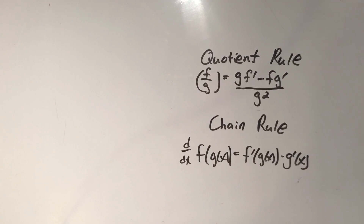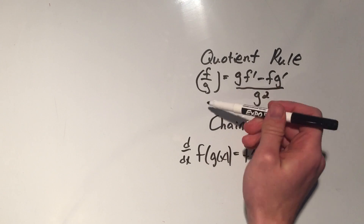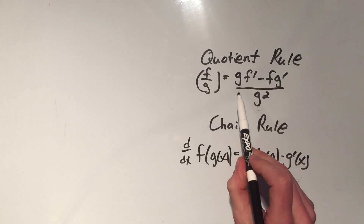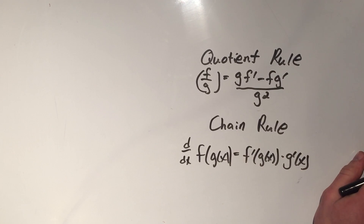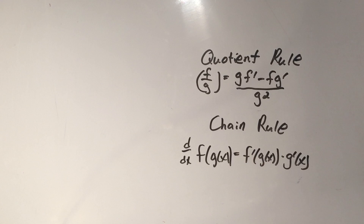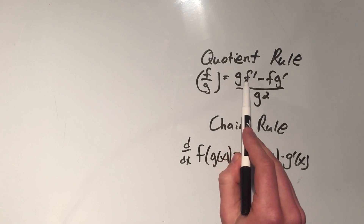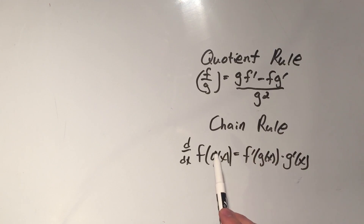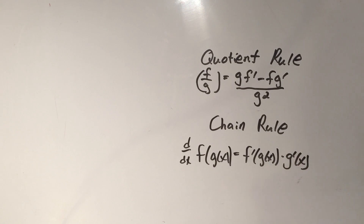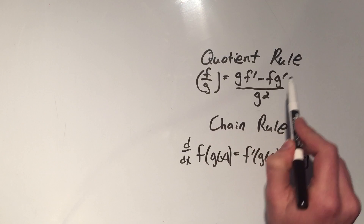The quotient rule — that's the one everybody hates the most — is for a quotient or fraction, a rational function f over g. It says it's g times f prime minus f times g prime over g squared. The saying I use to remember it: low d high, minus high d low, over low squared.